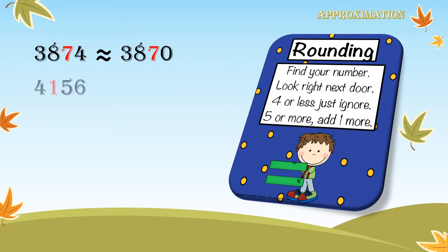Another example: 4,156. I wanted to approximate to the nearest 100. Where is my 100s place? Excellent — it's 1. Find your number, already colored red. Look right next door — it's a 5. Four or less? Just ignore. Is it 4? No. Five or more? Add 1 more. So I will replace the 1 in the 100s place with 2. What about 5 and 6? Replace them with 0. The answer will be 4,200.